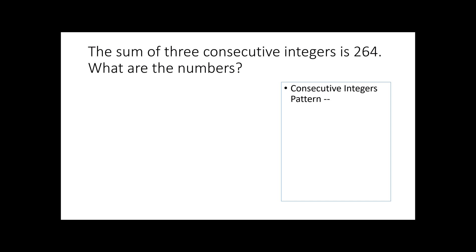Here's a very common question asked in algebra 1: the sum of three consecutive integers is 264. What are the numbers? Notice we're given the sum — that's addition — of three consecutive integers, equaling 264. The problem is there's a big gap: three consecutive integers. If you know what consecutive integers are and you've seen that pattern before, this is a very simple problem. However, if that term is foreign to you, this could become a very difficult or even impossible problem to solve.